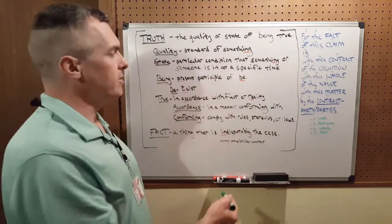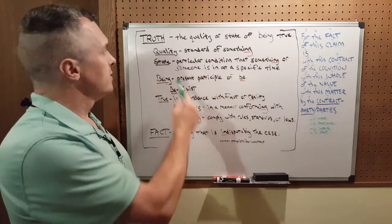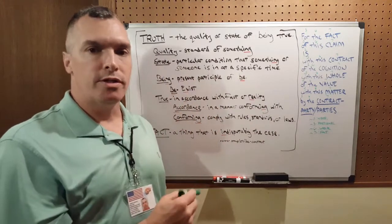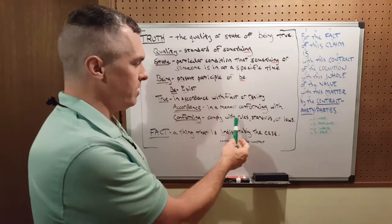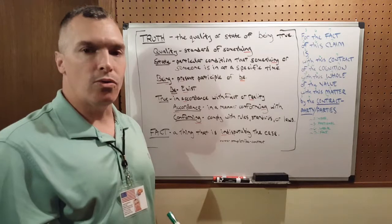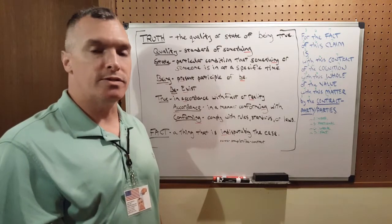So in essence, what they're telling you after all of this searching and study is that the truth is created by people because people create rules, standards, or laws. Because you are conforming with someone's creation.